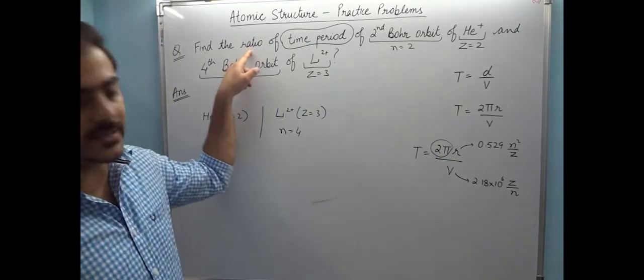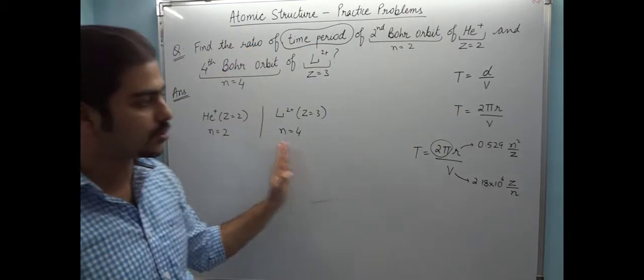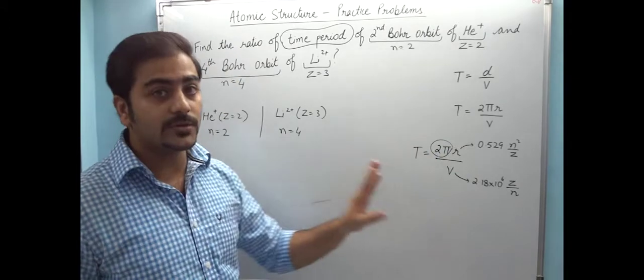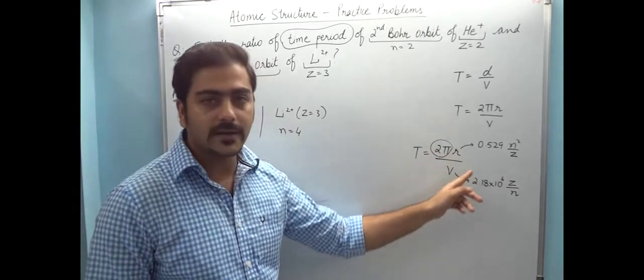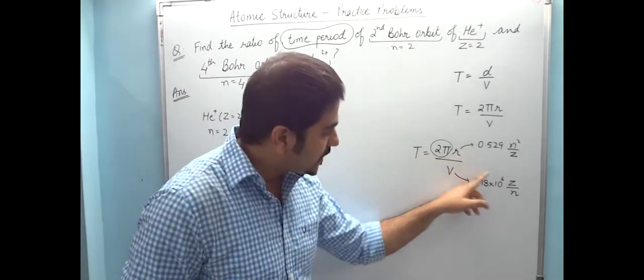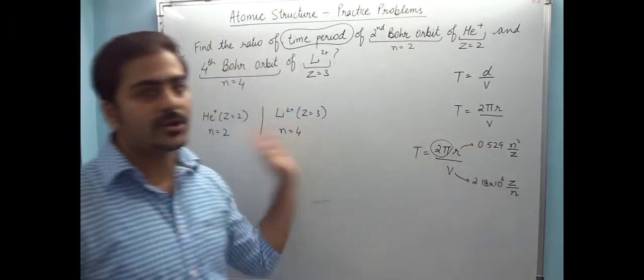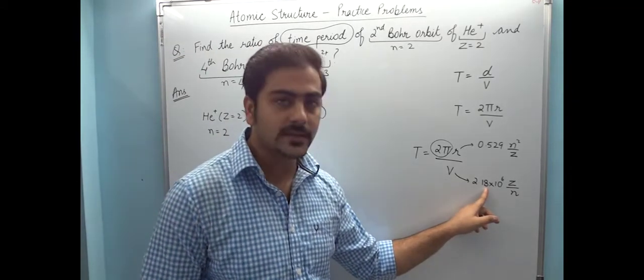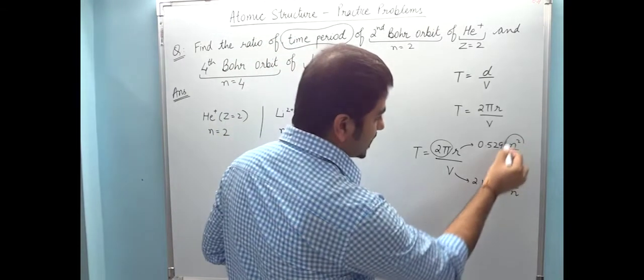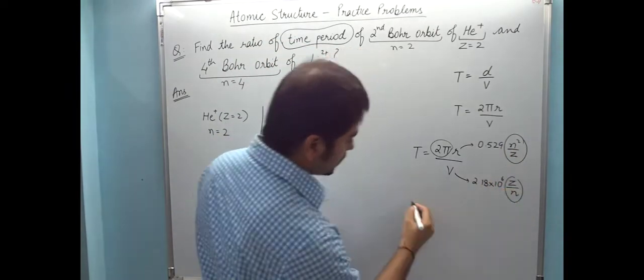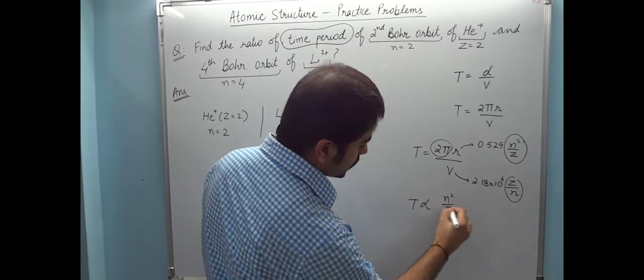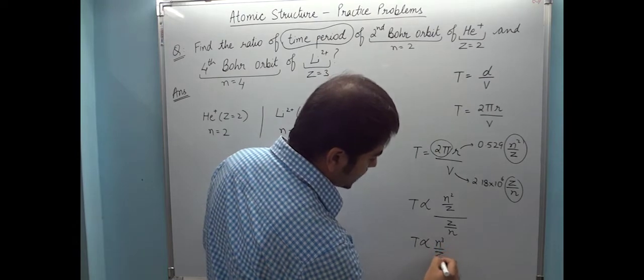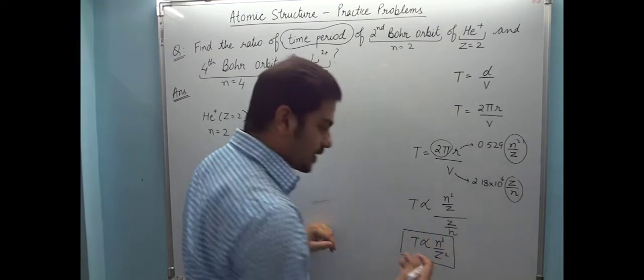If we have a ratio, helium and lithium both use the same formula, then we divide both. So when we divide, 2π is common, 0.529 will be cut, similarly 2.18 × 10⁶ will be cut. So effectively, time period is proportional to n²/Z × 1/(Z/n), so time period is proportional to n³/Z². This formula you can remember.